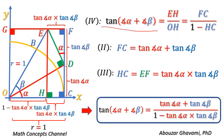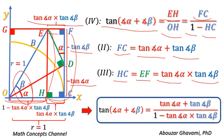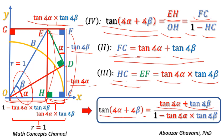We obtain tangent of angle alpha plus angle beta equals EH divided by OH, which equals FC divided by 1 minus HC. We obtained length of side FC equals tangent of angle alpha plus tangent of angle beta, and length of side HC equals tangent of angle alpha times tangent of angle beta. Substituting HC and FC, we get tangent of angle alpha plus angle beta equals tangent of angle alpha plus tangent of angle beta divided by 1 minus tangent of angle alpha times tangent of angle beta. That is the equation for tangent of addition of angles.